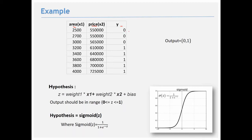In logistic regression, the hypothesis z = w1*x1 + w2*x2 + bias can be continuous, but the output must be between 0 and 1. We apply the sigmoid function to z, which maps any value to the range [0, 1]. If the sigmoid output is less than 0.5, we classify it as 0; if greater than 0.5, we classify it as 1.